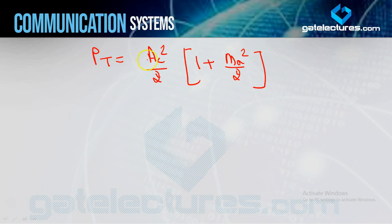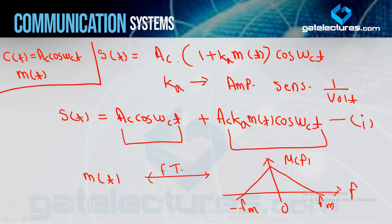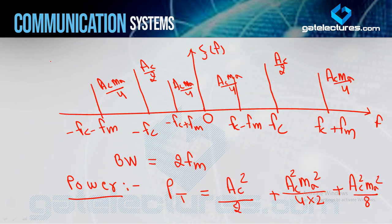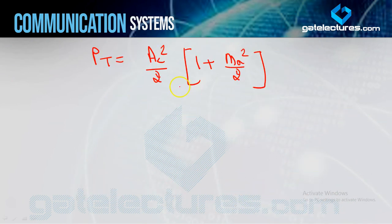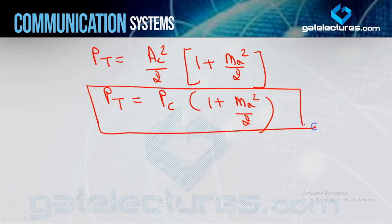AC²/2 is the carrier signal power before modulation. So PC = AC²/2, and the total power formula is: PT = PC (1 + mA²/2). This is the standard equation for total power in case of amplitude modulation.